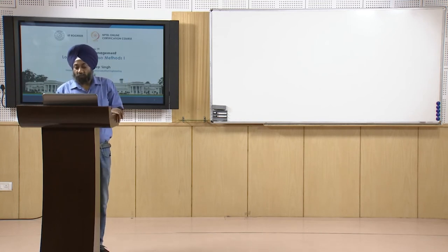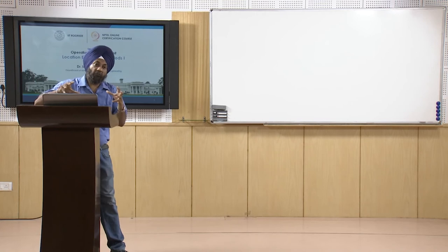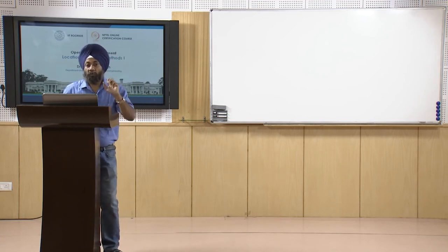Let us quickly go to the cost-volume analysis. In cost-volume analysis we require the fixed and variable cost associated with a particular location. We have to plot the total cost — all of us know that total cost is the summation of fixed cost and variable cost, a little bit of economics involved here. Then we have to determine which particular location is offering us the lowest overall cost.